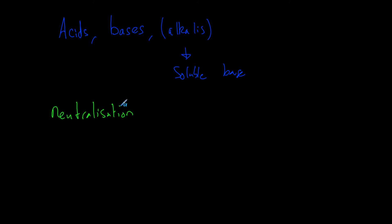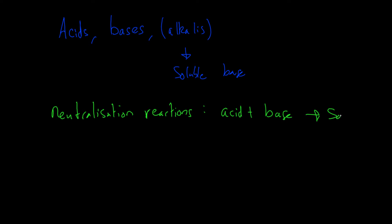Neutralisation reactions are defined as when an acid plus a base — notice base and not alkali, because sometimes it's not an alkali — react to form a salt plus water. So acid plus base makes salt plus water. Even though it's known as a neutralisation reaction, we won't always end up at an exactly neutral pH. An acid has a pH below seven and a base has pH above seven. Sometimes if you don't have the right amount of acid or base, your result is not going to be seven, but you will still have a neutralisation reaction take place.